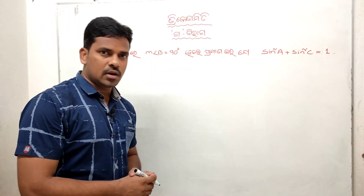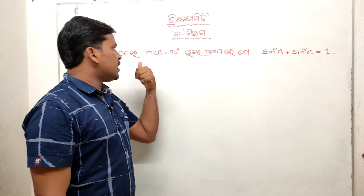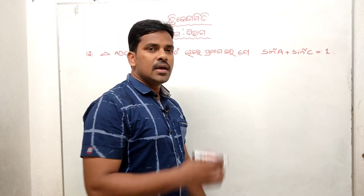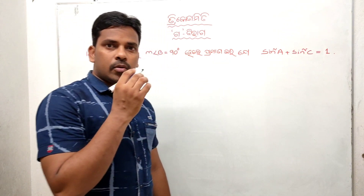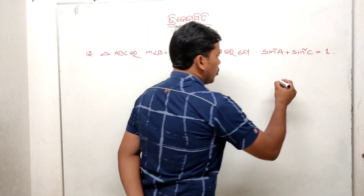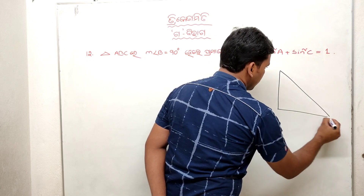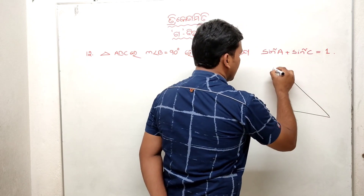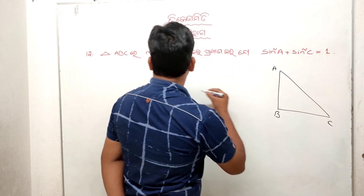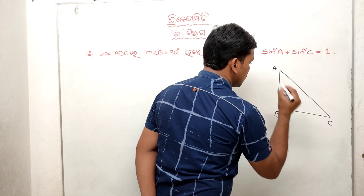Let's start with a question: In triangle ABC, angle B equals 90 degrees. We need to prove that sin squared A plus sin squared C equals 1.